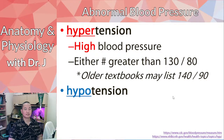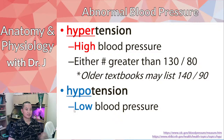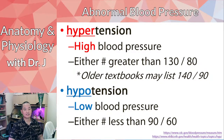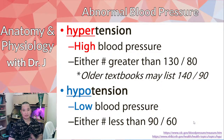Hypotension is the opposite — 'hypo' meaning low. The definition and cutoffs for hypotension are more varied and less standardized than for hypertension. For this class, we'll use less than 90 over 60 as hypotension. Different textbooks and institutions vary on this, but it's definitely well below 120 over 80.